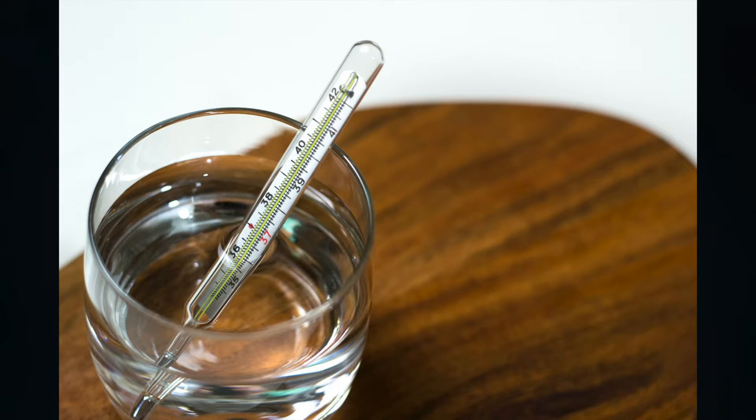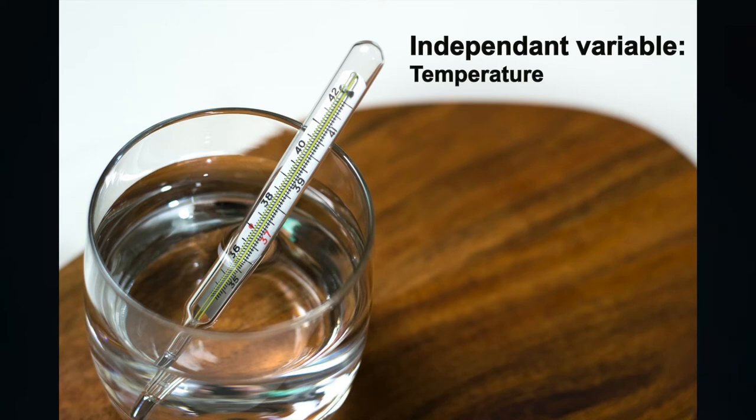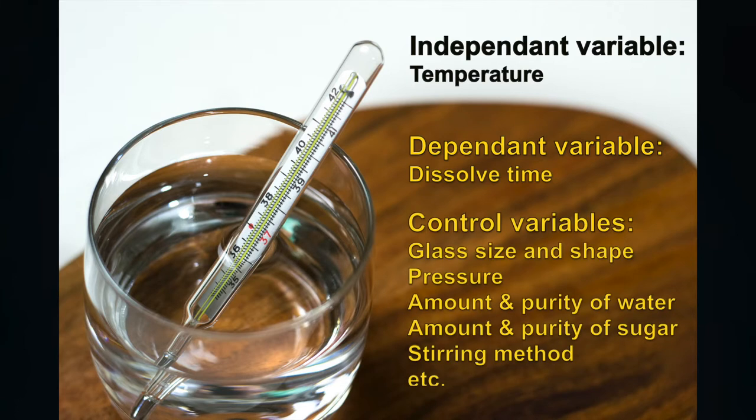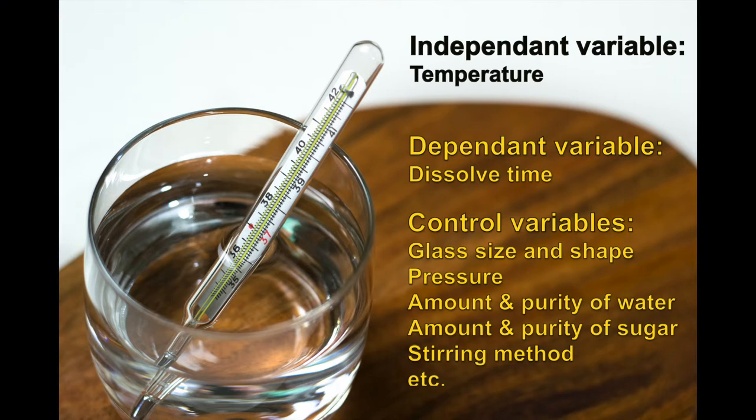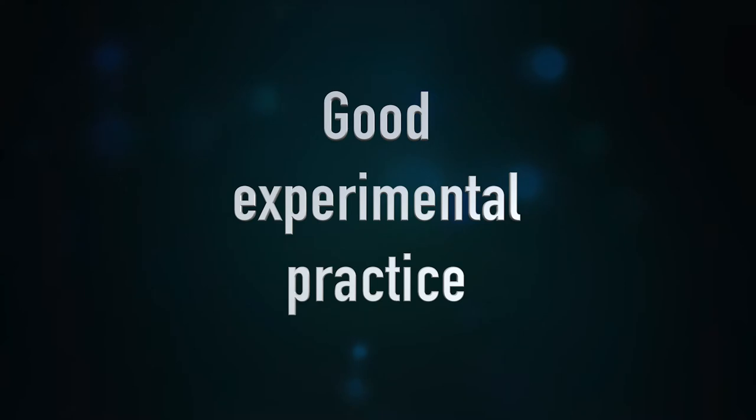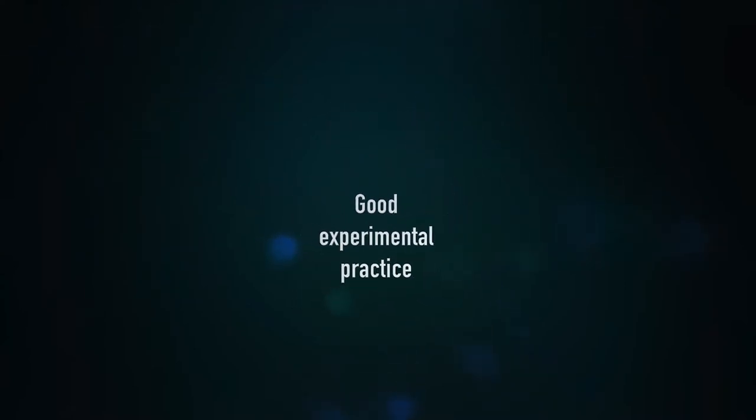Scientifically speaking, in this experiment, temperature is the independent variable, meaning that how it varies does not depend on anything else. Dissolve time is the dependent variable, as it depends on temperature. And other factors, such as size or shape of the glass or pressure, these are all called control variables and they should be the same whenever this experiment is done. Good experimental practice is to identify all these variable types and keep these control variables fixed.